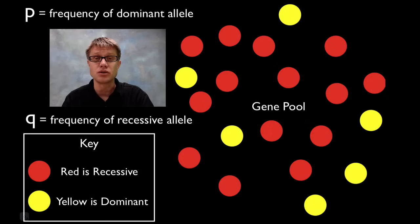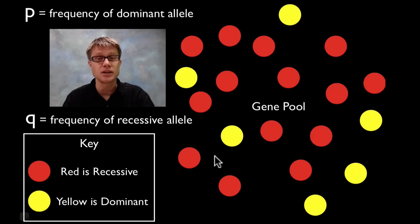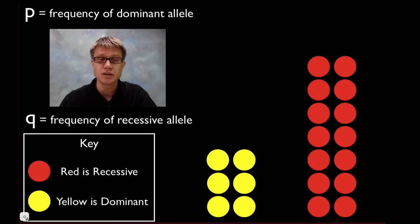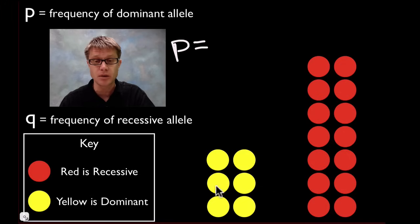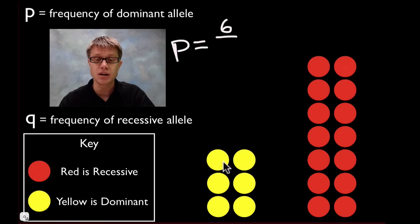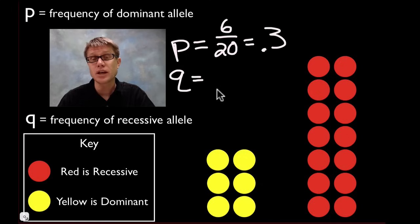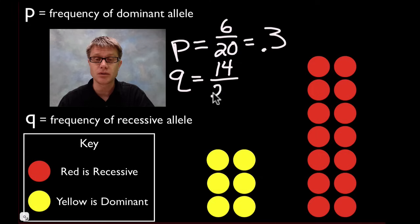We use letters to represent these two frequencies. P will always represent the frequency of the dominant allele, and Q represents the frequency of the recessive allele. Counting the non-red alleles: there are 6 non-red alleles out of 20 total, so P equals 0.3. Then Q, the frequency of recessive alleles, is 14 out of 20, giving Q equals 0.7.